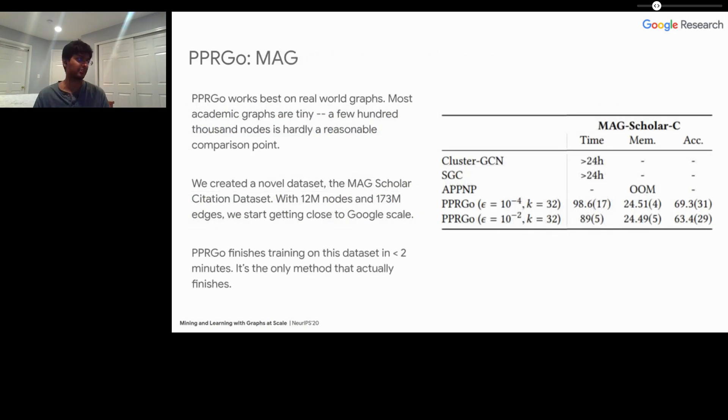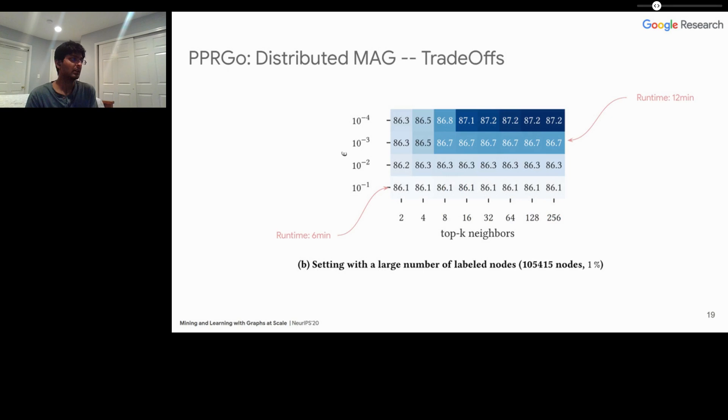But we don't necessarily care that much about the smaller data sets. PPR Go was designed to work on real world graphs. That was the problem that we were trying to solve. Most of these academic graphs are actually really small. Even Reddit, which has a few hundred thousand nodes, is just not a reasonable comparison to the kind of data that we see every day at Google. So we created a novel data set that we wanted to open source so that other folks who are in the graph learning community can test their approaches on this large scale data problem. The MAG data set has 12 million nodes and 173 million edges, and it has 2.8 million node features. While that's still probably a little bit less than the kind of data that we might see on the upper end at Google, it's starting to get close to Google scale. It's certainly large enough that we wouldn't be able to store the entire adjacency matrix in memory, which you could reasonably do with even up to the Reddit graph. It's worth noting that on a single machine, PPR Go is the only method that actually finishes training on the MAG data set. And even then it finishes in less than two minutes, which I think is really impressive.